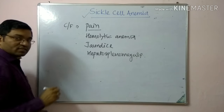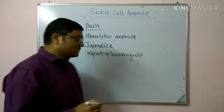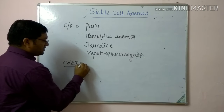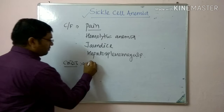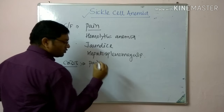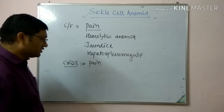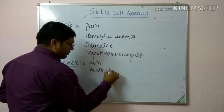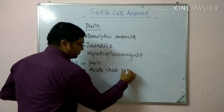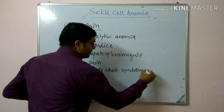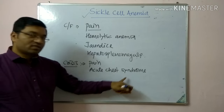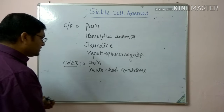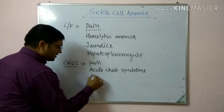Sickle cell anemia results in various crises. The first important one is the pain crisis, due to blockade in the microvasculature. This also includes acute chest syndrome, which occurs when there is blockade in the vessels of the lungs and heart.